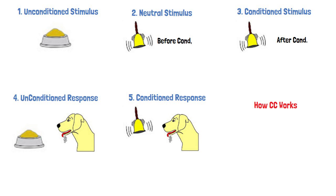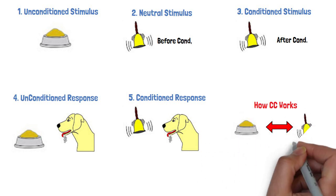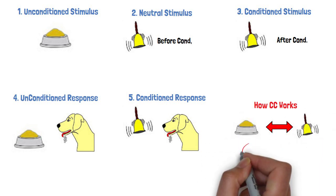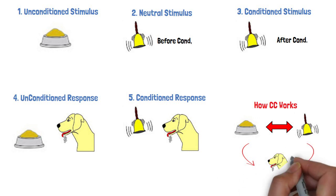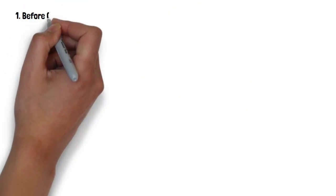How classical conditioning works. Classical conditioning involves forming an association between two stimuli, resulting in a learned response. There are three basic phases of this process.